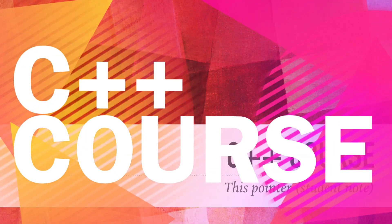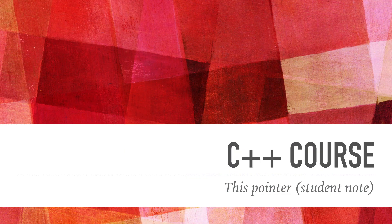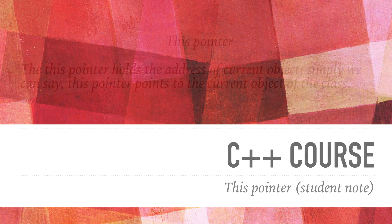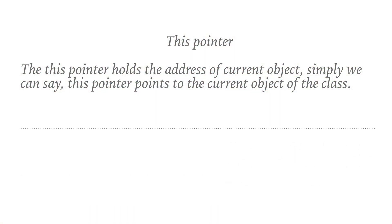Welcome back to the C++ course. In this section, we will talk about the 'this' pointer. This pointer holds the address of the current object. Simply, we can say, this pointer points to the current object of the class.